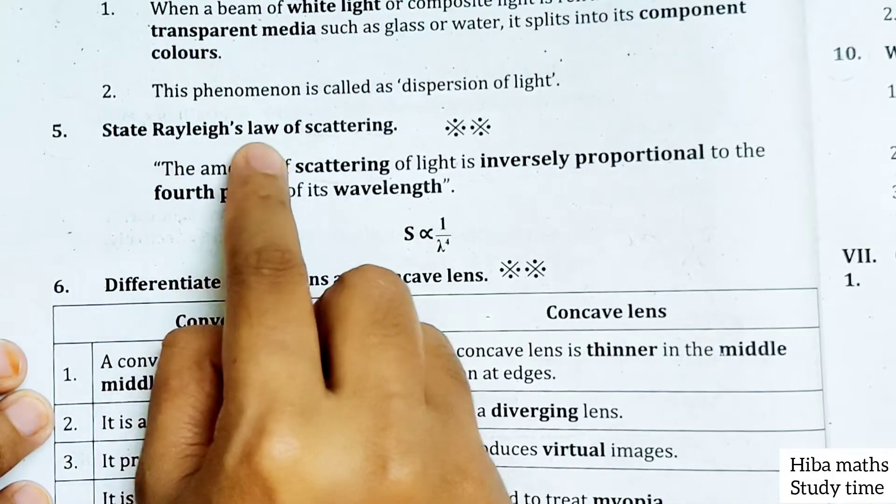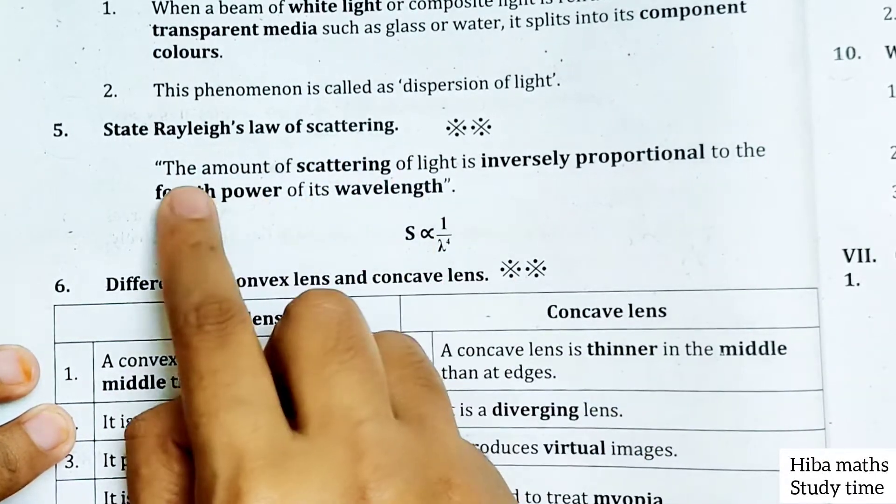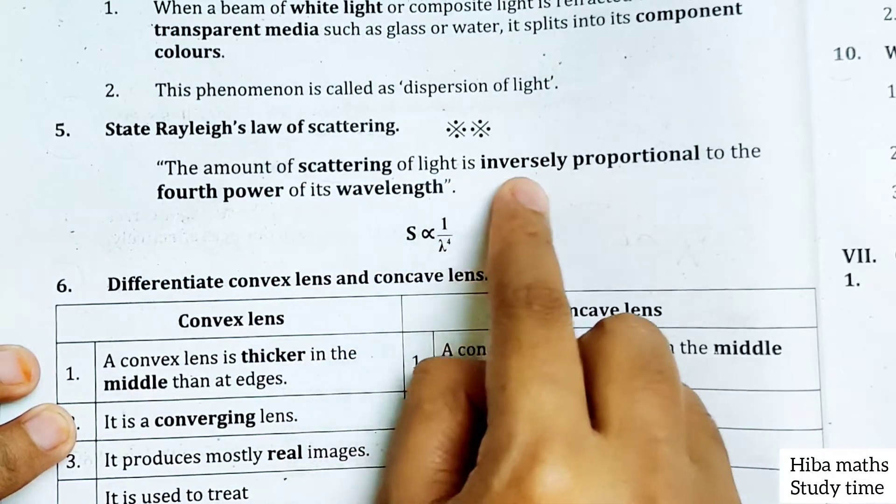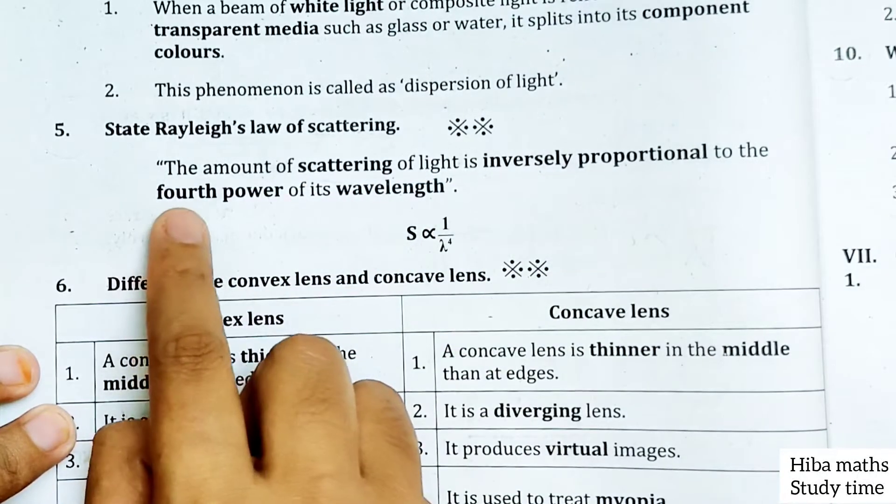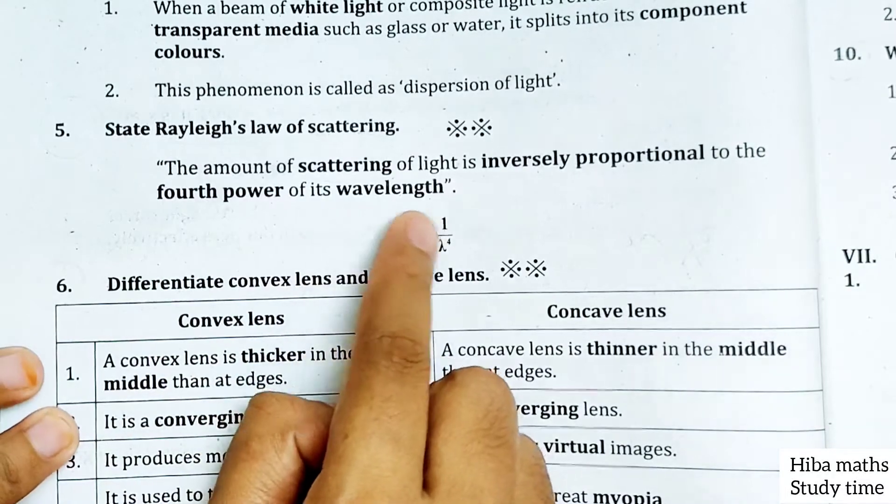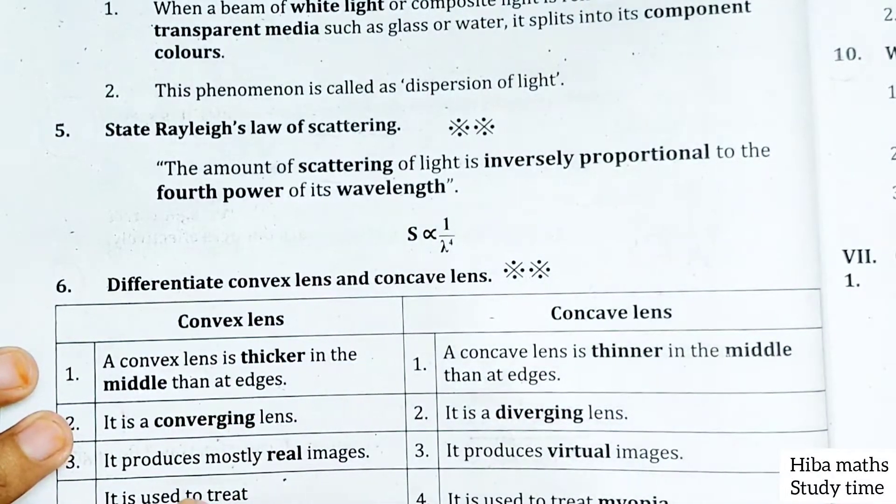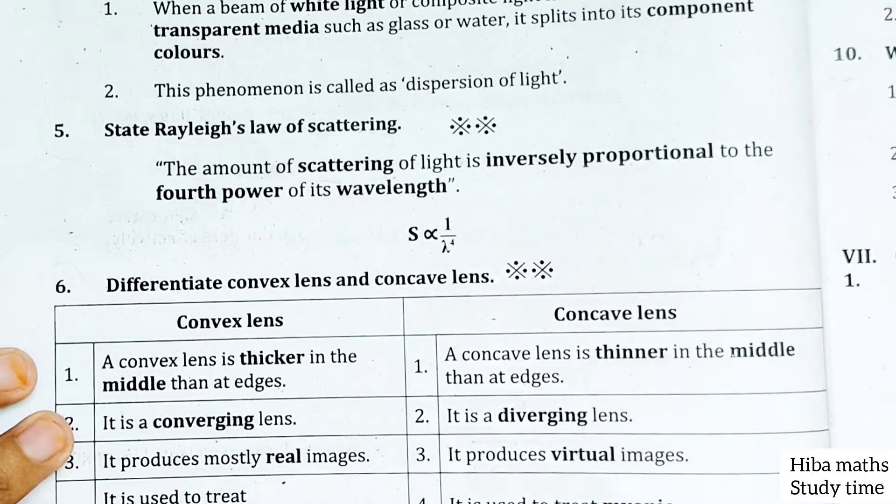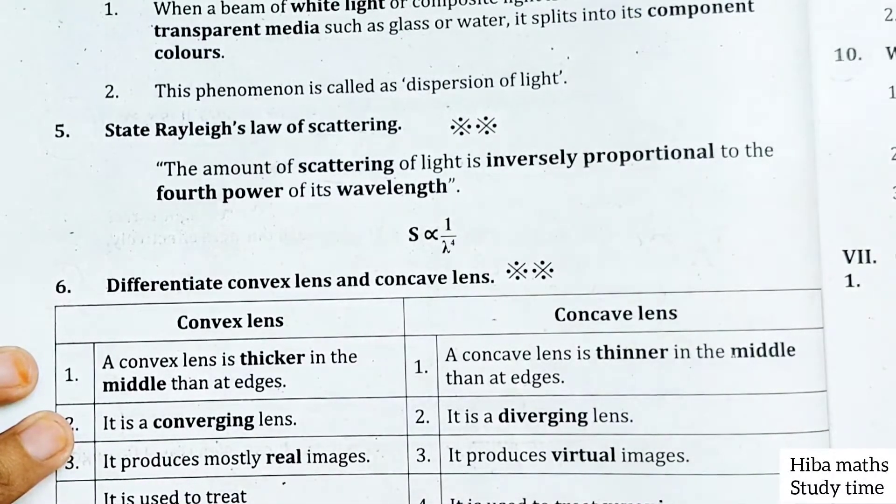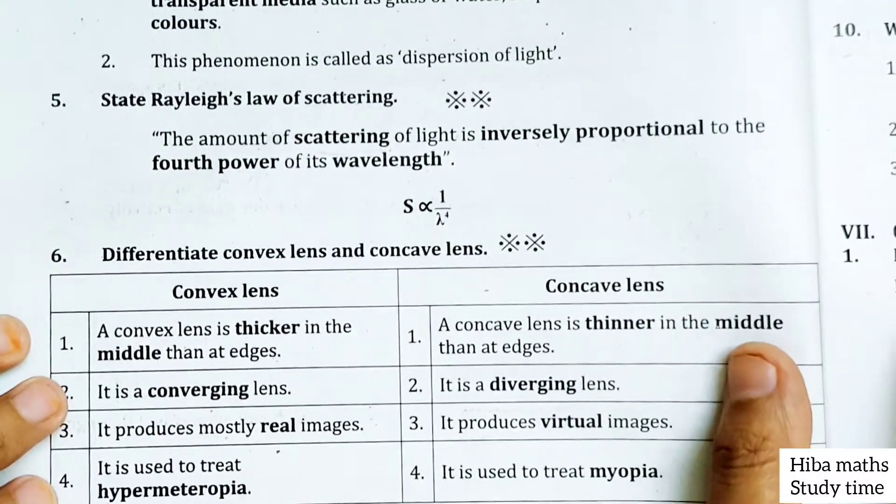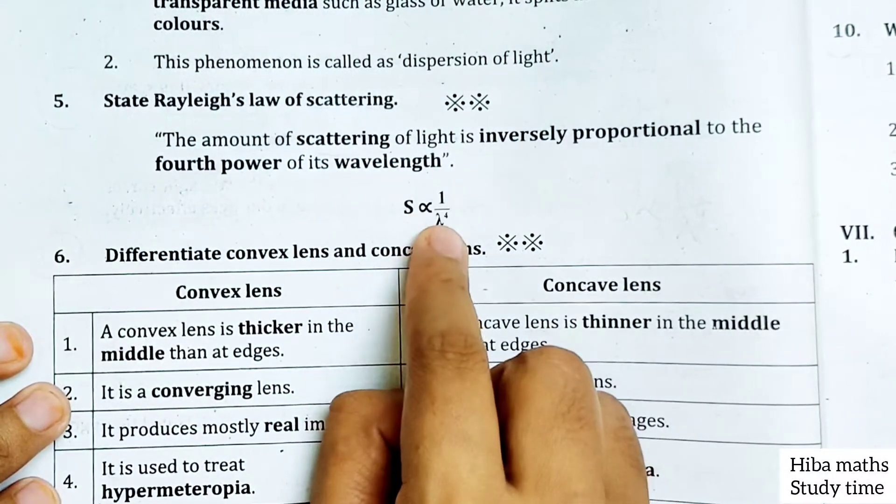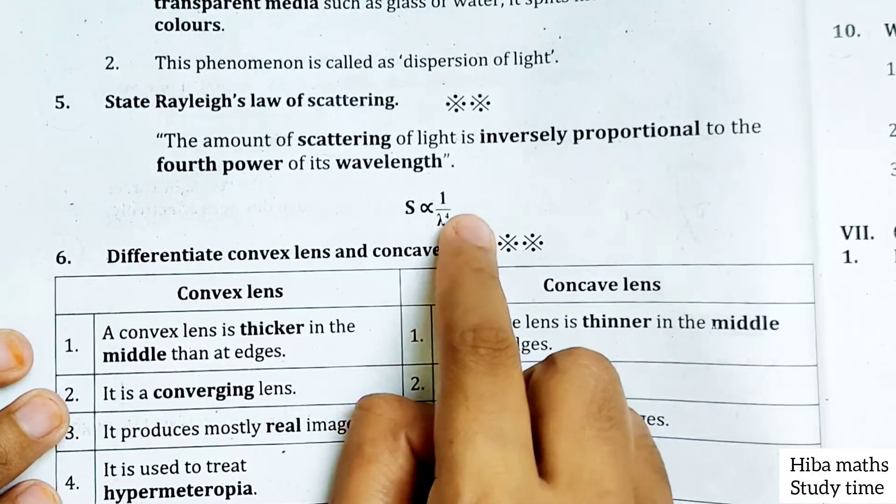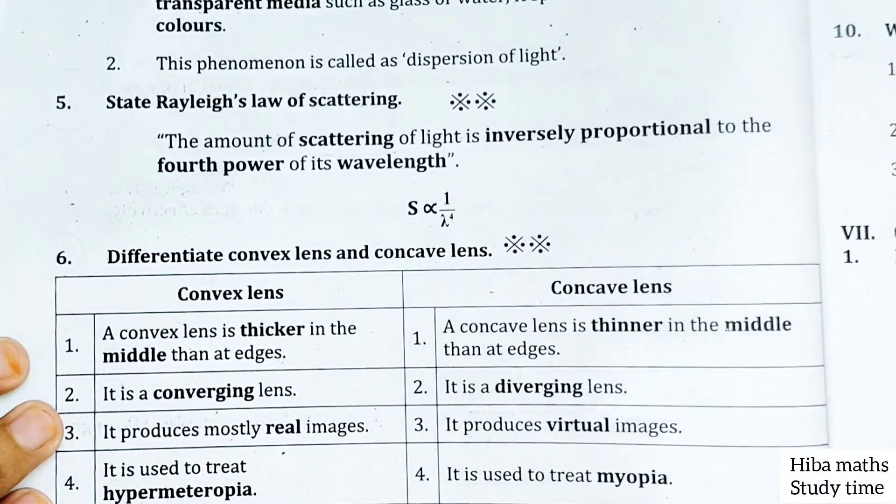State Rayleigh's law of scattering. The amount of scattering of light is inversely proportional to the fourth power of its wavelength. Different colors have different wavelengths. Blue light has one wavelength, red light has a different wavelength. The scattering of light is inversely proportional to lambda to the fourth power of its wavelength.